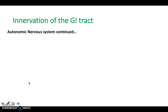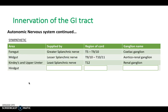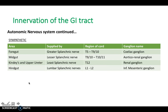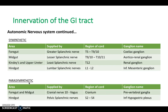Some people may find it useful to view this in a table, allowing you to understand the area supplied, where the supply comes from, what region of the cord it's from, and what ganglion it synapses within. Likewise, you can do this for the parasympathetic nervous system. Remember: sympathetic is thoracolumbar, parasympathetic is craniosacral.